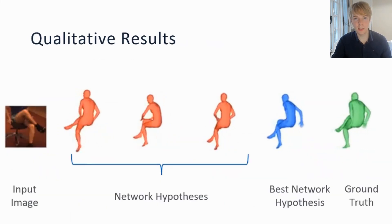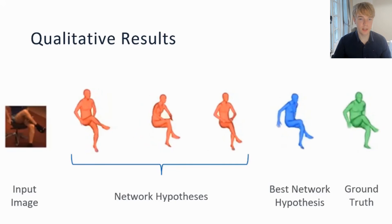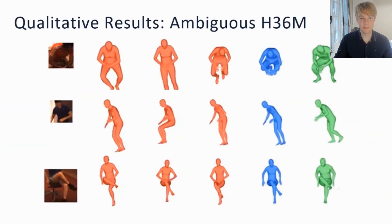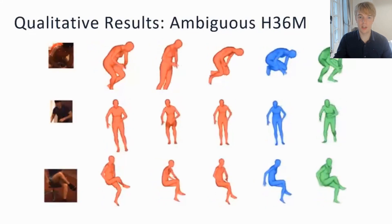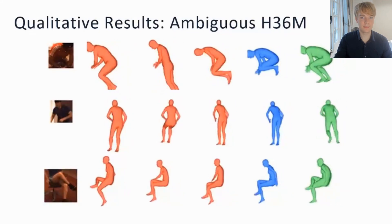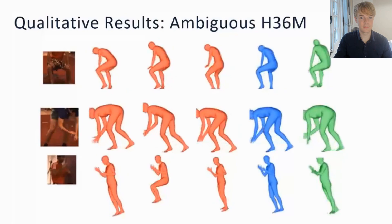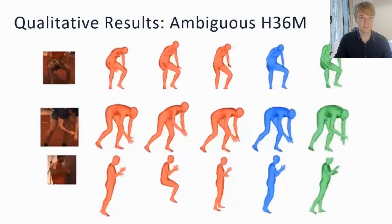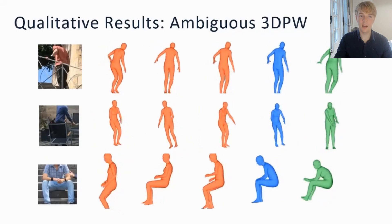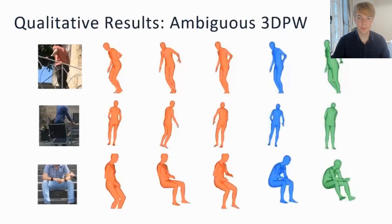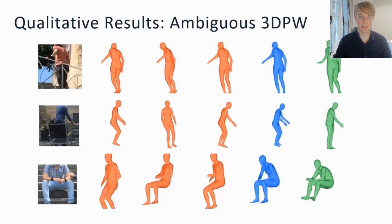For qualitative results, we show the input image, three network hypotheses in red, the best hypothesis in blue, and the ground truth in green. We first show results on our ambiguous version of Human36M, and also results on 3DPW, a dataset that we do not use for training.